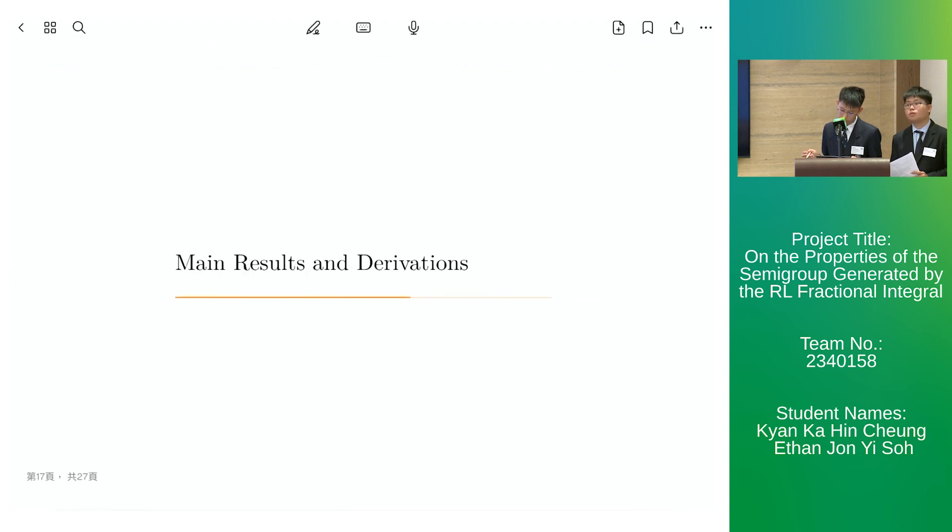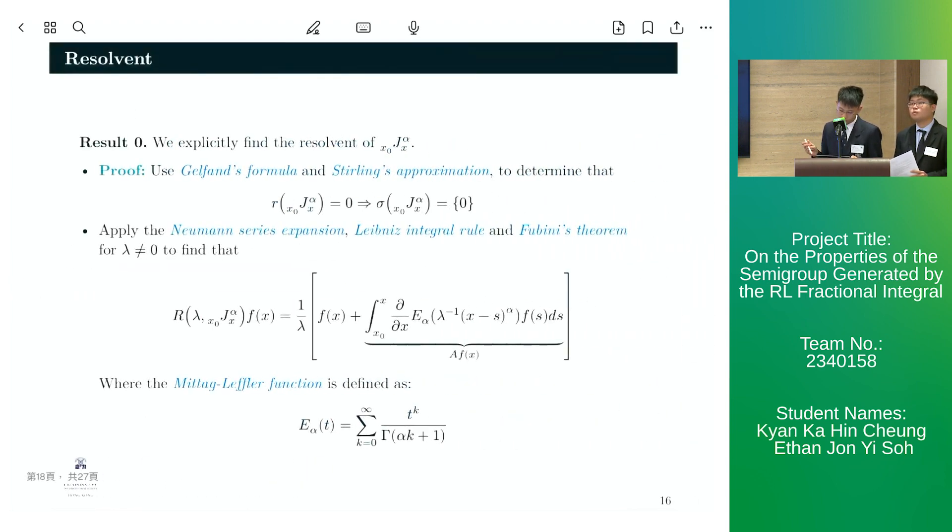We now move on to our main results and derivations. Our first result is that we determine an explicit expression for the resolvent of J alpha. We do this by firstly using Gelfand's formula and Stirling's approximation to determine that the spectral radius of J alpha is equal to zero. And this allows us to safely proceed to the next step,